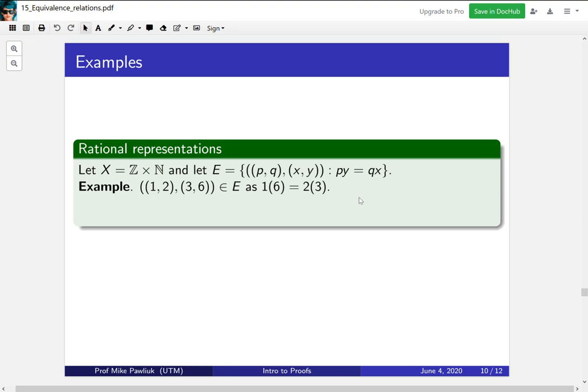Now this is a complicated formal way of doing it, and the intuition might illuminate things. If you do some cross multiplication, this is saying that p over q is equal to x over y. So this is saying that they are equivalent as fractions.